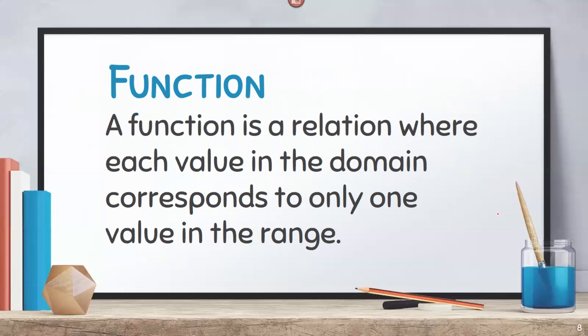This time, let us define a function. Function is a relation where each value in the domain corresponds to only one value in the range. From the definition, since function is a relation, we can say that function is also a set of ordered pairs. However, function is a special kind of relation in the sense that every value of x is paired to only one value of y. Therefore, not all relations can be a function.